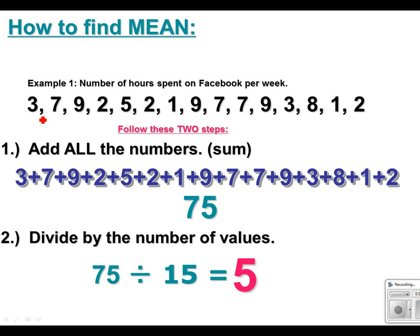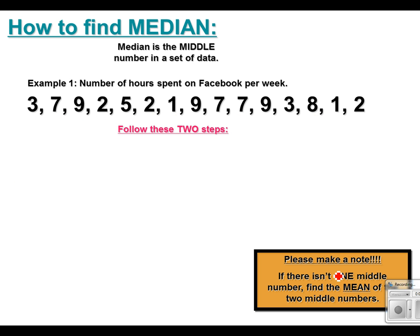That kind of makes sense — five is the average. If you look at all these numbers, they're pretty close to five. Two is only three away, seven is not too far, three is not too far, eight is not too far either. All these numbers kind of hover around five, so that's a good measure of central tendency to say that the mean or the average is five. Now let me show you how to find the median.